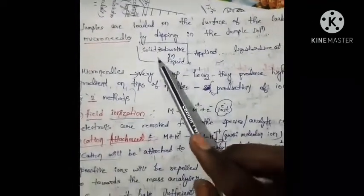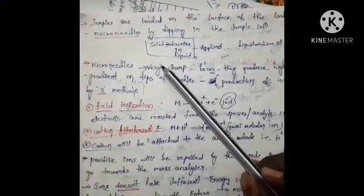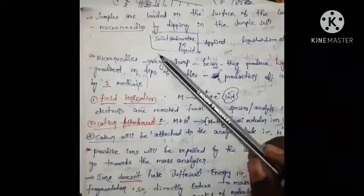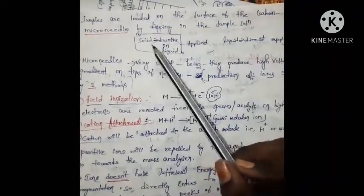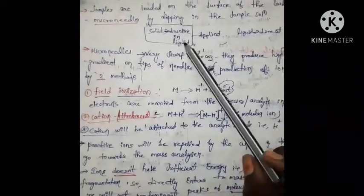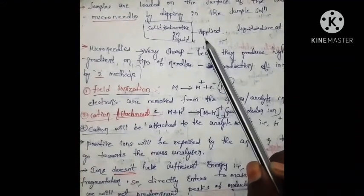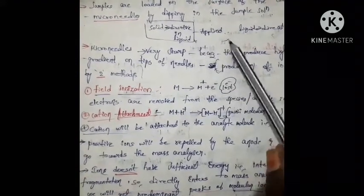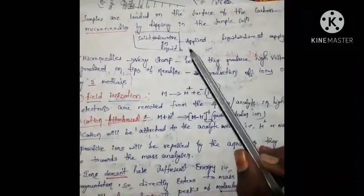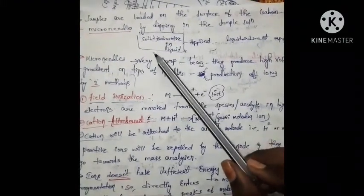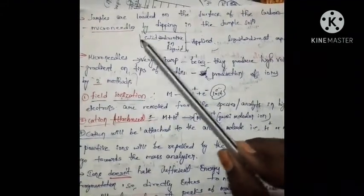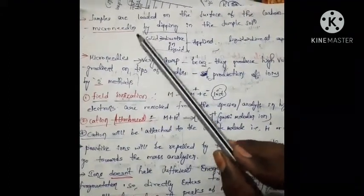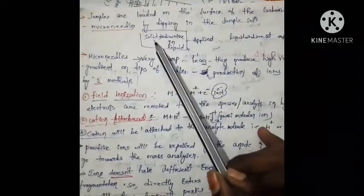Referring back to the block diagram: samples are loaded on the surface of carbon micro needles by dipping in the sample solution. On those carbon micro needles shown in the diagram, the samples are loaded by dipping them into the sample solution.